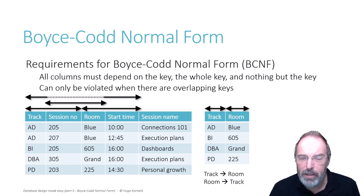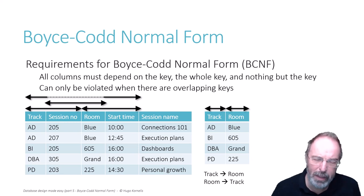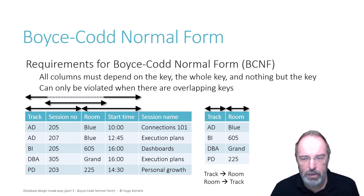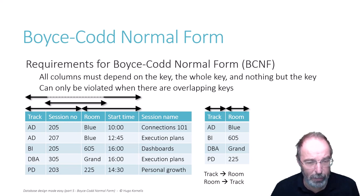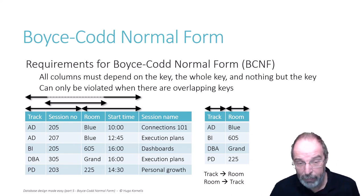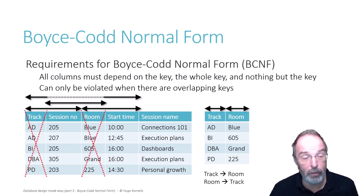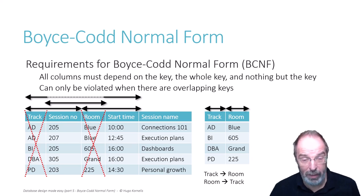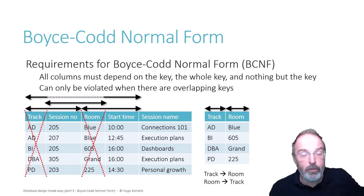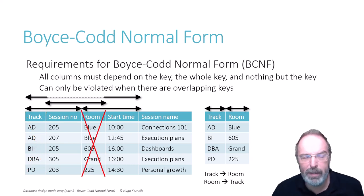Now in the previous cases, we often had a table with one key column and one or more non-key columns, and then we could remove those non-key columns from the original table. Here we can choose whether to keep the track column and remove room, or whether to keep the room column and remove track. Either choice is correct. In this case, I am going to choose to remove the room column, but the discussion would have been the same if I had removed the track column.